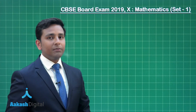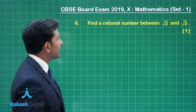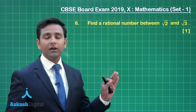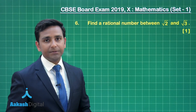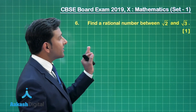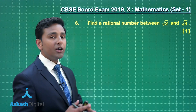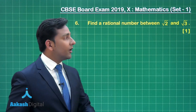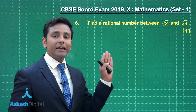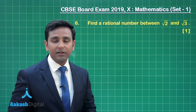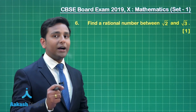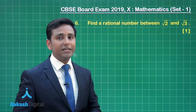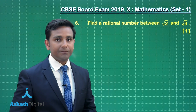Now let us solve question number 6. This question is from the first chapter, Real Numbers, and it states: find a rational number between root 2 and root 3. Root 2 and root 3 are both irrational numbers, and you have to find one rational number between these two given numbers.